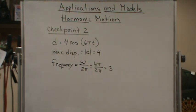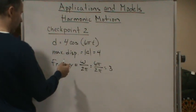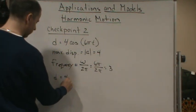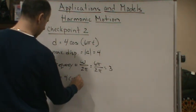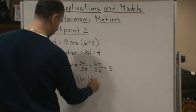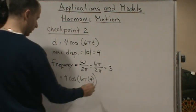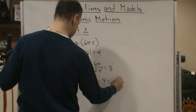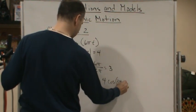Now we want the value of D when T is equal to 4. So let's do that. So D equals 4 cosine of what? 6 pi times 4.